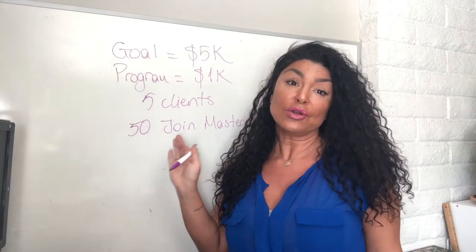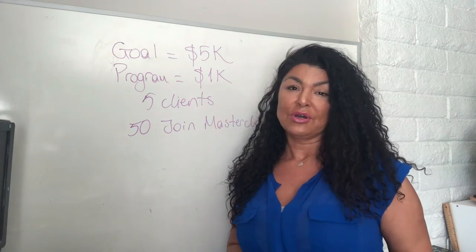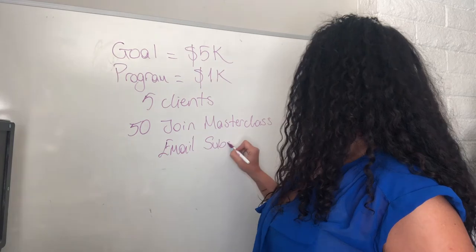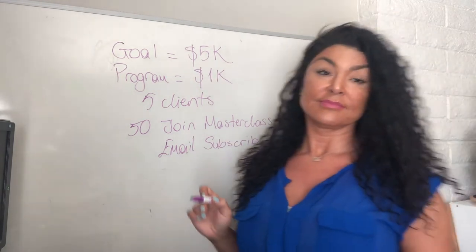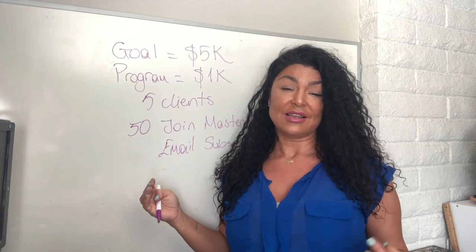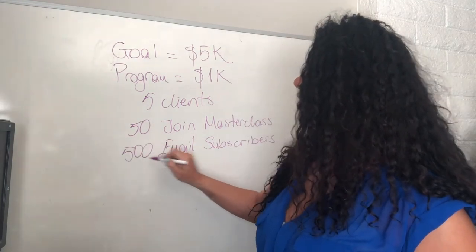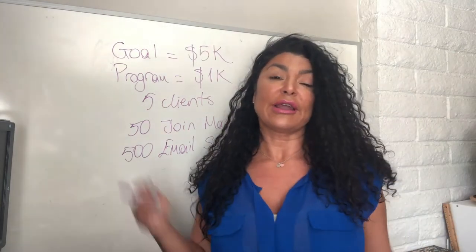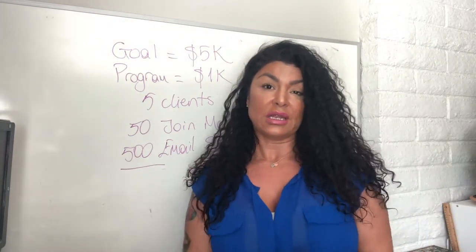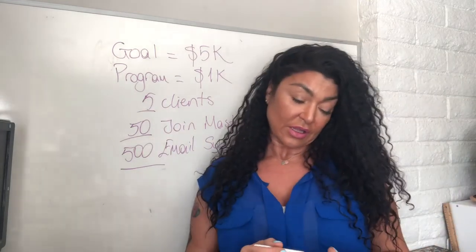Then in order to have 50 people join our masterclass, how many people do we need on our email list? The people joining your masterclass are supposed to be 10% of the people who sign up to your email list, so that would be 500. If you look at a 1% conversion rate from your email list, you need 500 people to sign up to your email list and 50 people to join your masterclass to get five clients booked.